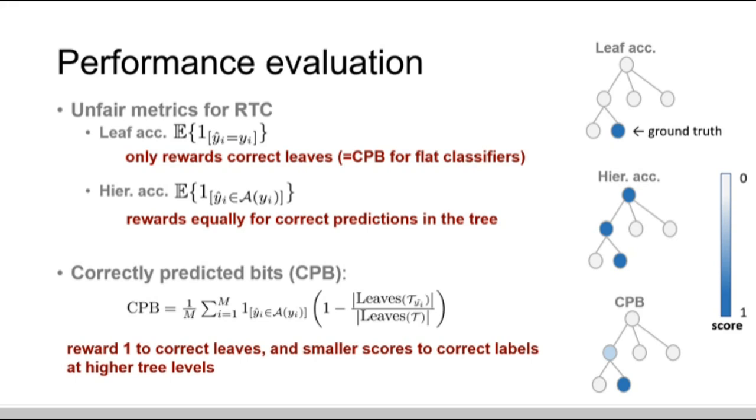To measure these, we propose a new metric, correctly predicted bits, CPB, which measures how much information is predicted correctly. CPB rewards 1 to correct leaves and smaller scores to correct labels at higher tree levels. This is the only fair metric to compare the models.